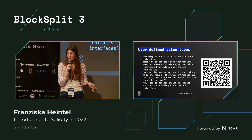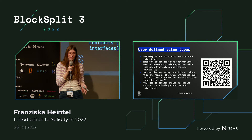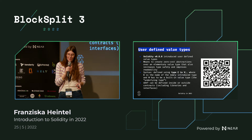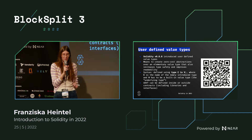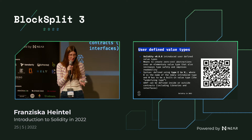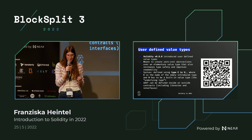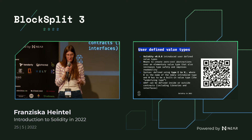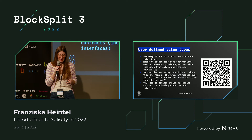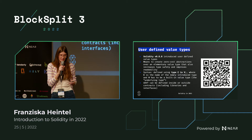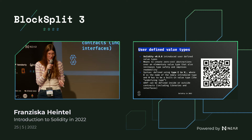In version 0.8.8 we introduced user-defined value types — quite a popular feature. This means you can create zero-cost abstractions over an elementary value type, which increases type safety and improves readability overall. If you're interested in the syntax you can read about it in the linked blog post, and they can be defined inside or outside of contracts.